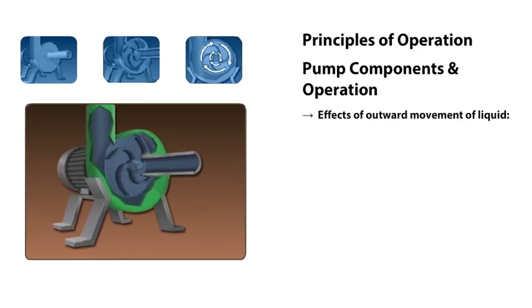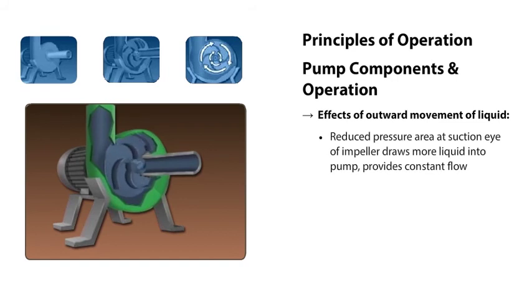The outward movement of the liquid causes two things to happen. First, it creates a reduced pressure area at the suction eye of the impeller. This area of lower pressure draws more liquid into the pump and provides a constant flow of liquid.